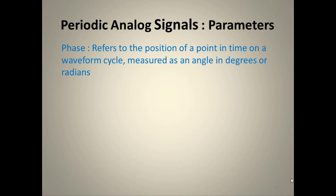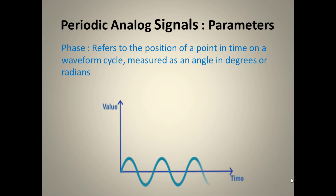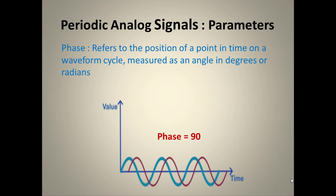Phase refers to the position of a point in time on the waveform cycle, measured in degrees or radians. If a signal starts from the origin, its phase is zero. A second signal starting after one-fourth of a wave has a phase of 90 degrees. A third signal starting after half a wave has a phase of 180 degrees.